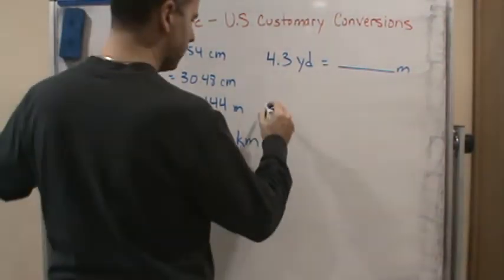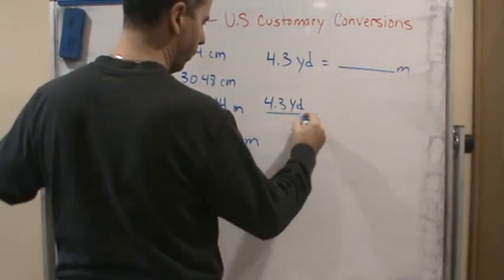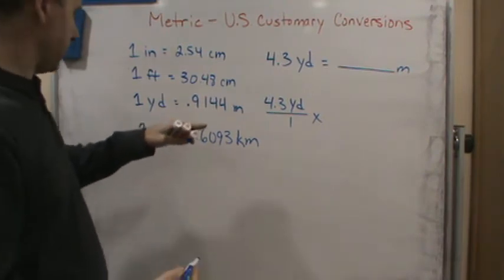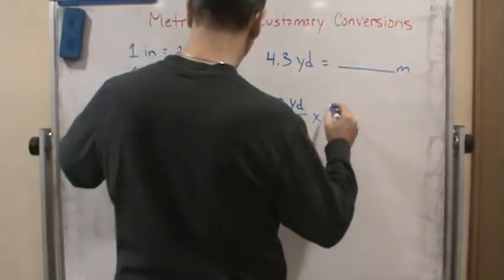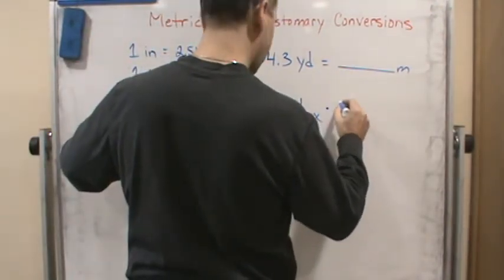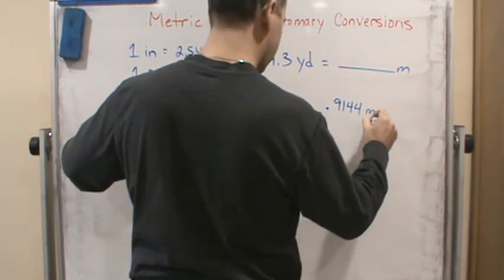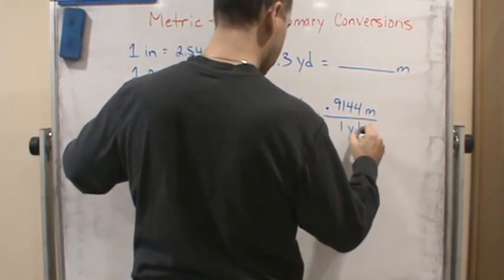And so I would start off again, 4.3 yards over one, and then multiply by the right unit ratio, which in this case is going to be 0.9144 meters over yards.